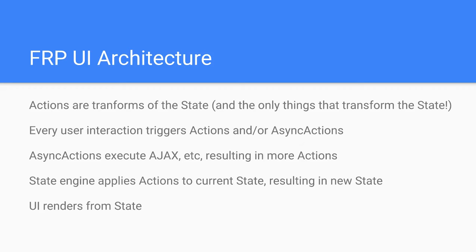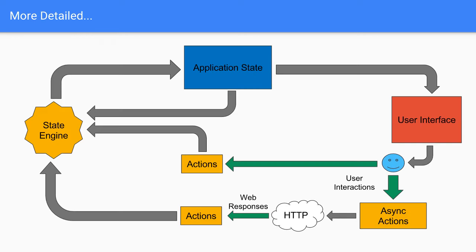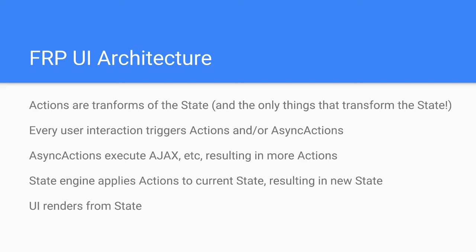Actions are simple pure functions that transform the state, and they are the only thing that transforms the state. So whenever your state gets screwed up, you know that's where it happened — that makes bugs easy to track down. Your user interactions and event handlers in the UI pretty much just create actions and async actions and send them down the pipeline. Async actions are for AJAX, calling OWF communication functions, and similar things. The results are represented as an FRP stream of more actions, and the state engine applies them to the state to make new state, which the UI gets rendered from.